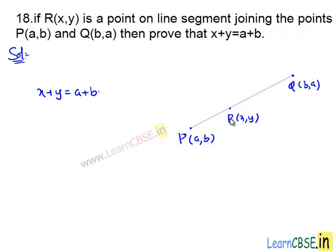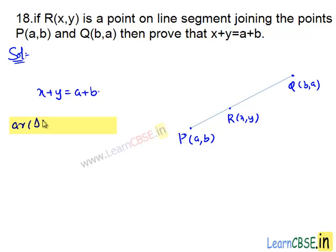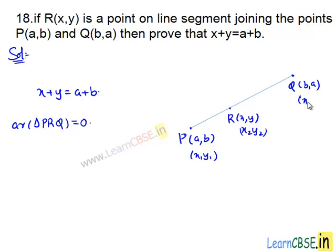Since these three points lie on a straight line, the area of the triangle formed by these three points will be zero. That is, area of triangle P, R, Q equals zero. Let us suppose point P as (X1, Y1), point R as (X2, Y2), and point Q as (X3, Y3).